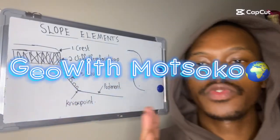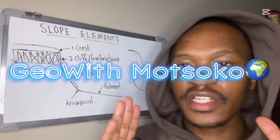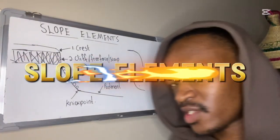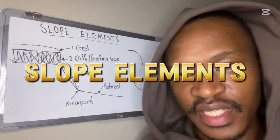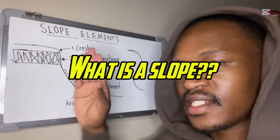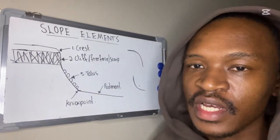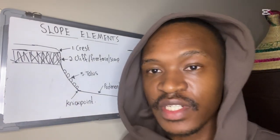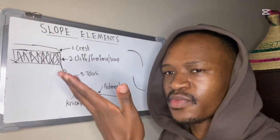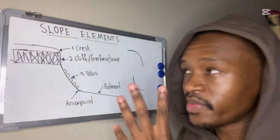Welcome to Gio Nutsuku. In today's video, we are covering the topic of slope elements. A slope is simply a curved and inclined surface which forms the boundary of landforms such as mountains. Slope elements simply refers to parts of a slope. There are four slope elements.